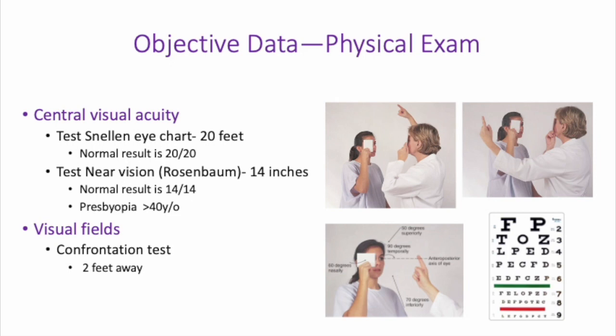The visual fields test, also called the confrontation test, tests your visual fields — your peripheral vision. You have the patient occlude one eye using their palm, an index card, or an opaque occluder. You move your finger at different fields of vision and ask them if they can see your finger within that field. That's the confrontation test.